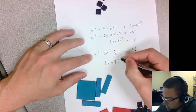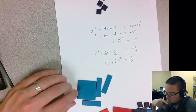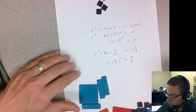So 3 halves squared is that equation there.